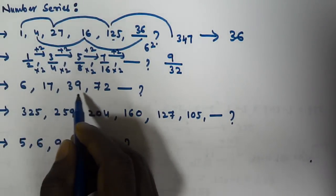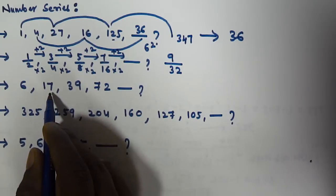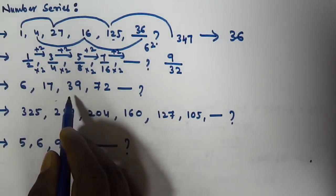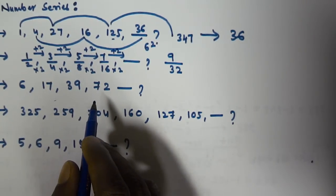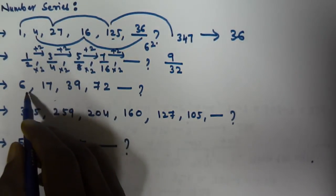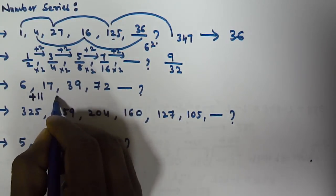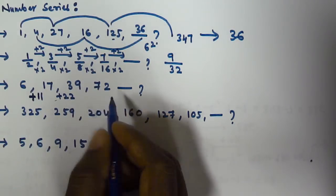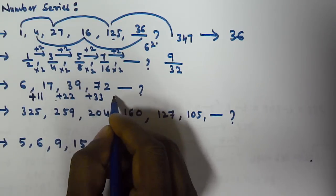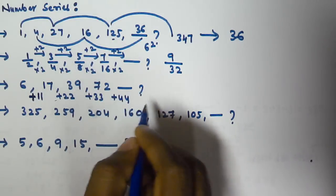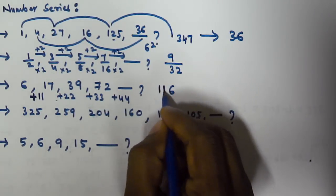For the series 6, 17, 39, 72: the differences are 11, 22, and 33. So we are adding 11, then 22, then 33 — increasing by 11 each time. That means we add 44 to 72 to get the next number. So 72 plus 44 equals 116. The next number is 116.